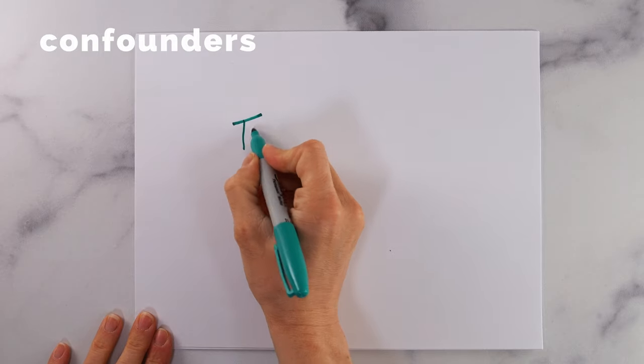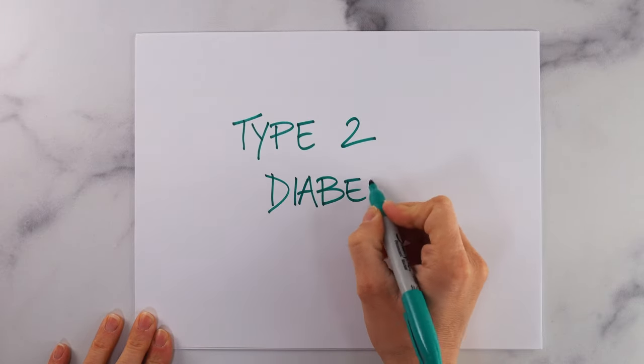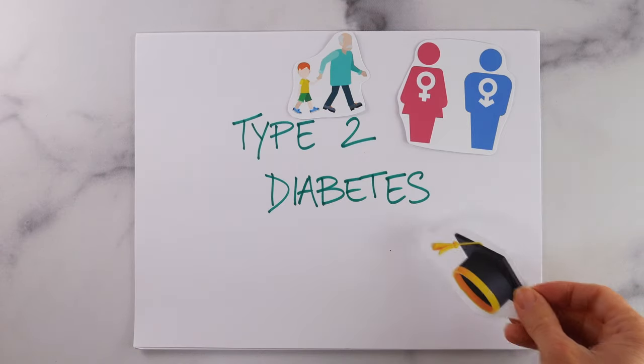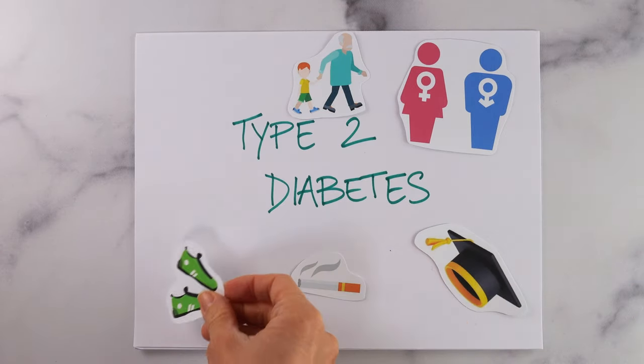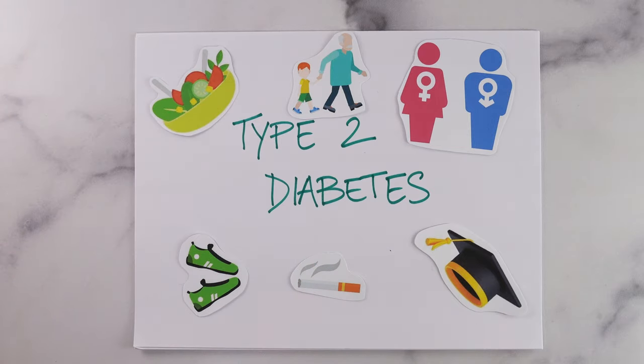A challenge in many observational studies like these case-controls is that there could be many other exposures that contributed to the type 2 diabetes besides sugary drinks. These are called confounders. In this study, the researchers also asked participants about other information like their age, sex, education, smoking status, physical activity, and other diet habits like fruit and vegetable intake.